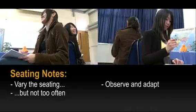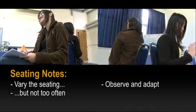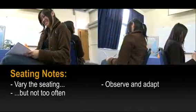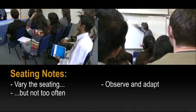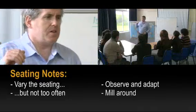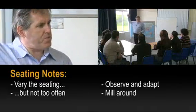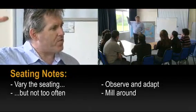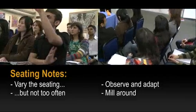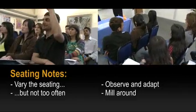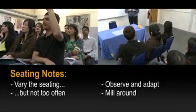Observe your class to determine which arrangements work the best for your group of students and adapt your seating plan accordingly. For some activities, no seating is required at all, as students walk around the classroom and have conversations with various partners.